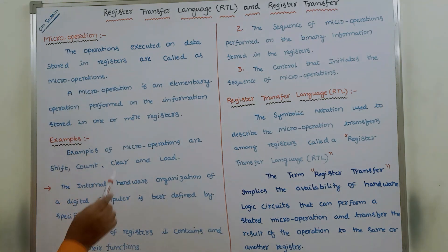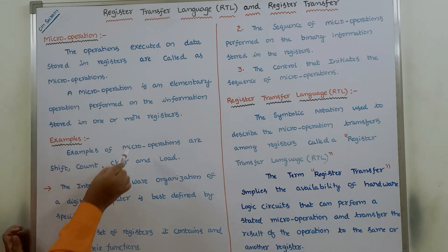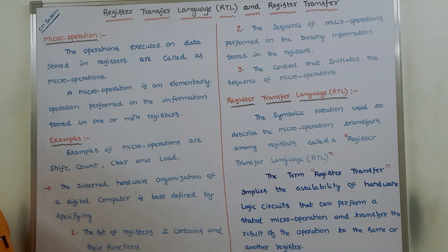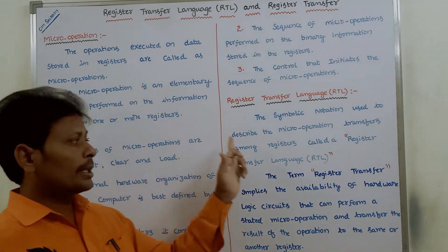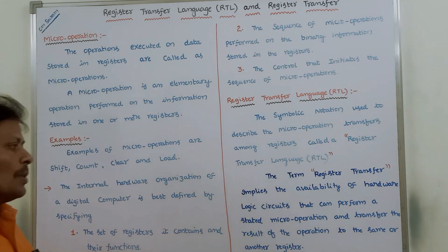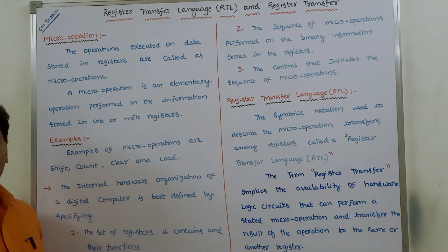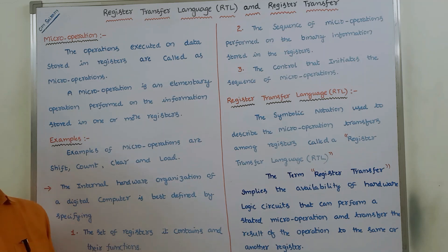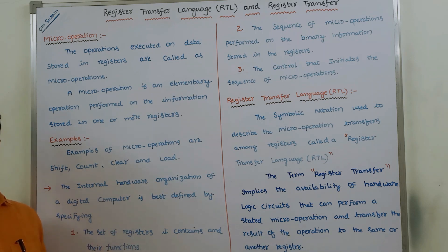Up to now, we have discussed what is micro operation, what are the examples of micro operations, how can you say that the internal hardware organization of a digital computer is best using three points, and what is register transfer. In the next part, we have to discuss how to represent the registers, what are the symbols we have to use in register transfer language, and how register transfer can be done by using a hardware logic circuit.